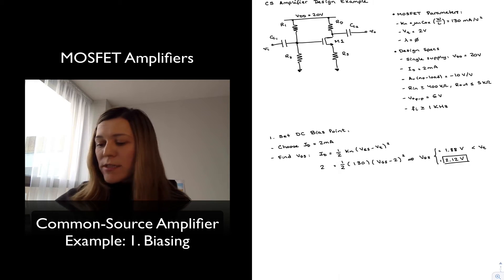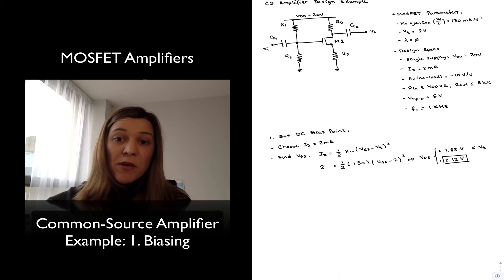Now I'm going to select my RD and RS resistors so that I partition my available supply voltage, which is 20 volts, between RD, RS, and my transistor M1. Keeping in mind, I want M1 to be out of saturation.